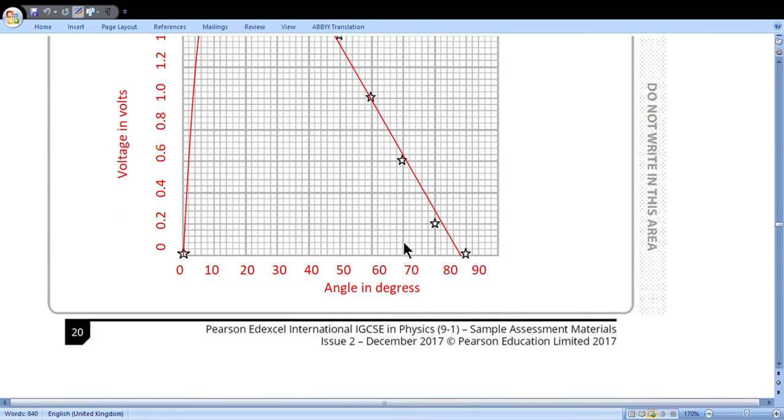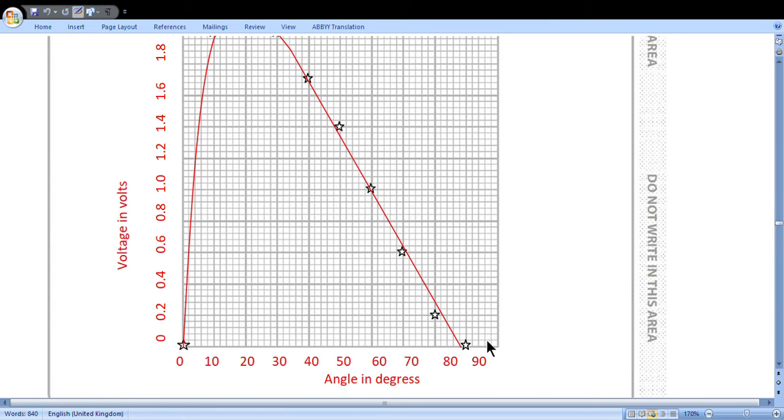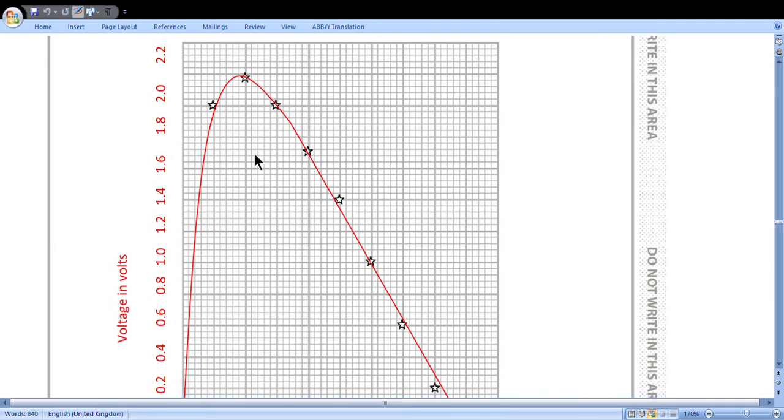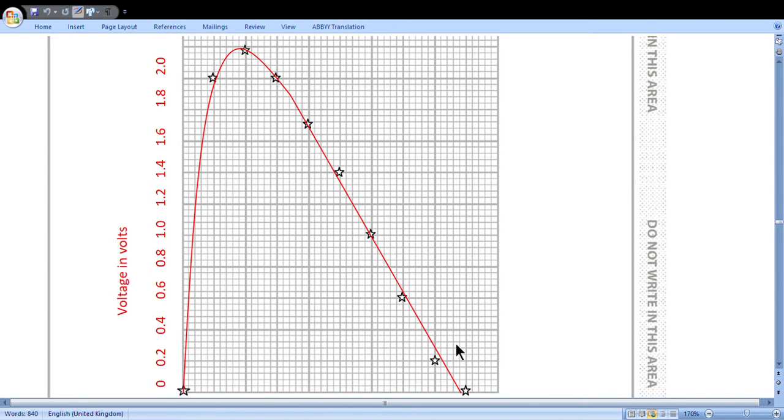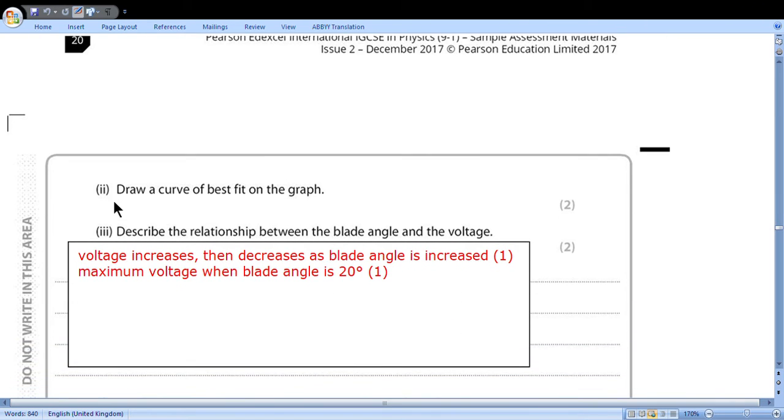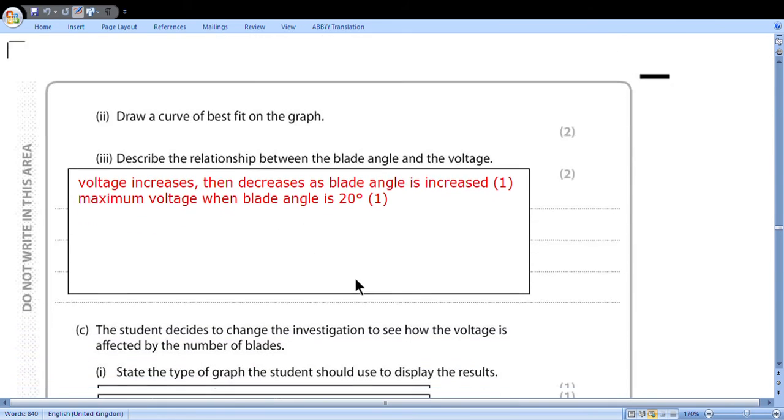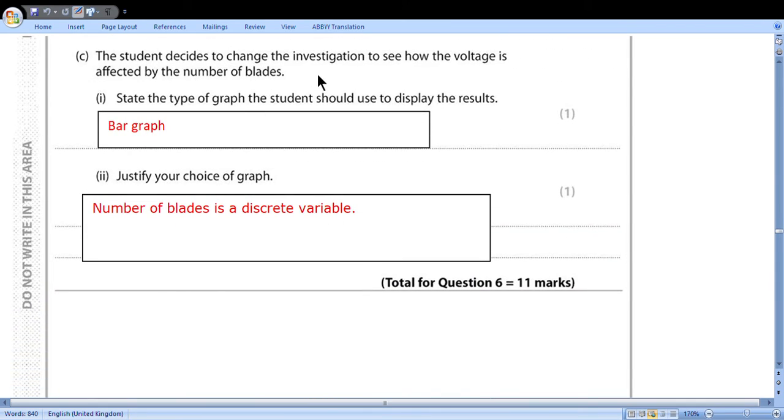So when you choose axes, they should occupy more than half for each axis. Then we plot points and then we draw a smooth curved line. What we see here: first increases, reaches maximum and then decreases. So draw a curve of best fit line on the graph. We did. Describe the relationship between the blade angle and the voltage. Voltage increases and decreases as blade angle is increased. Maximum voltage when blade angle is 20 degrees. The student decided to change the investigation to see how the voltage is affected by the number of blades. State the type of graph the student should use to display the results. Remember this name, bar graph. Justify choice of graph. Number of blades is a discrete, not continuous variable.